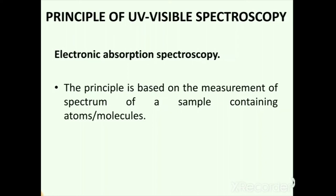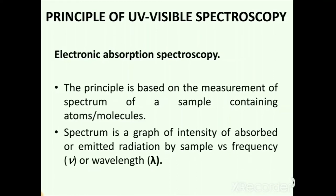The principle is based on the measurement of a spectrum of a sample containing atoms or molecules. A spectrum is produced when ultraviolet or visible radiation is incident upon a molecule under investigation. It is a graph of the intensity of absorbed or emitted radiation by the sample versus frequency ν or wavelength λ, and the study of absorbed or emitted radiation forms the basis of UV-Vis spectroscopy.